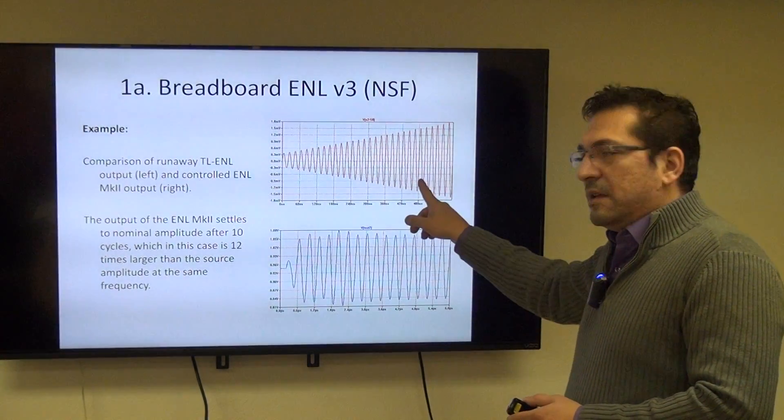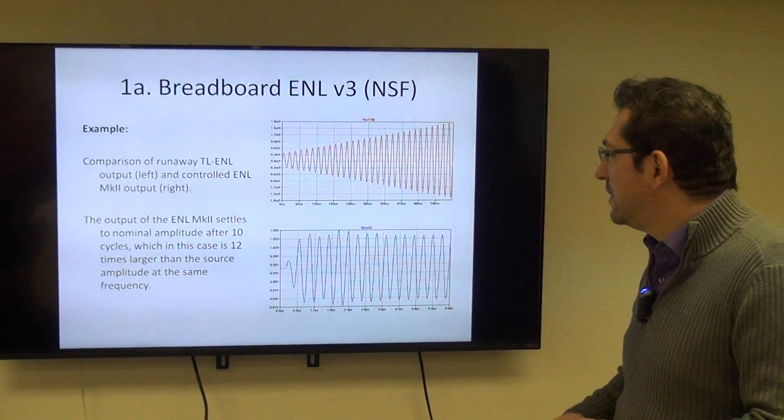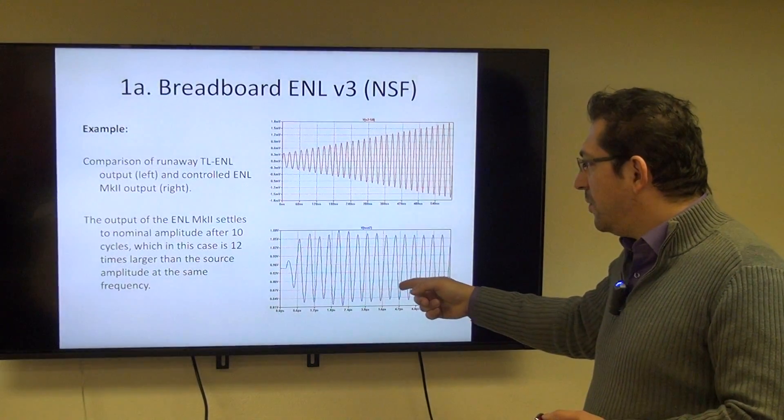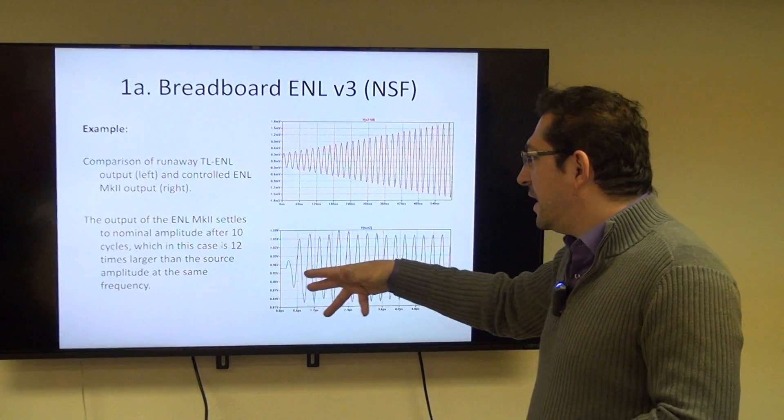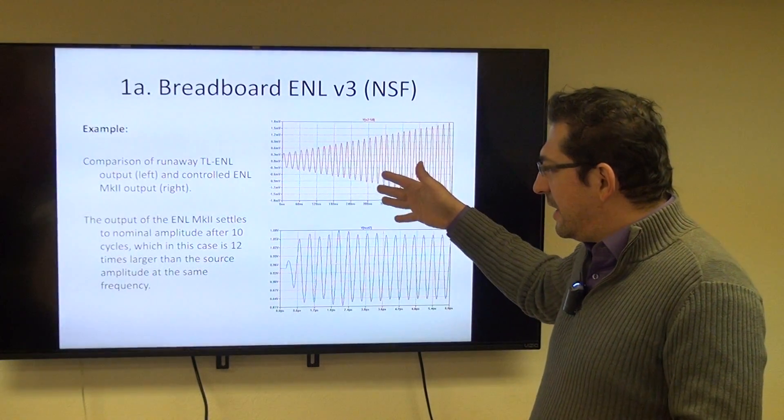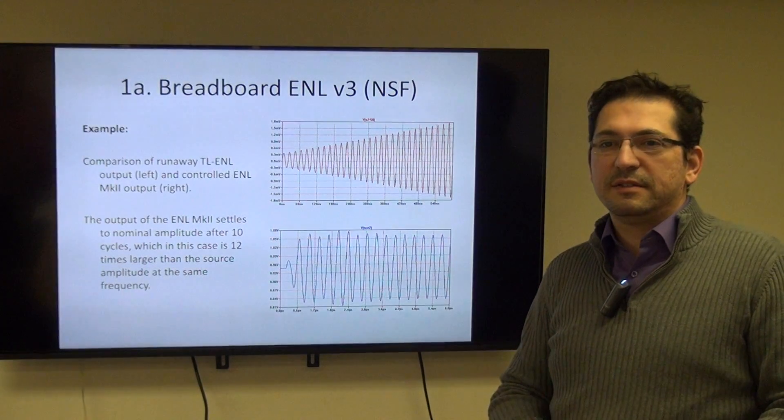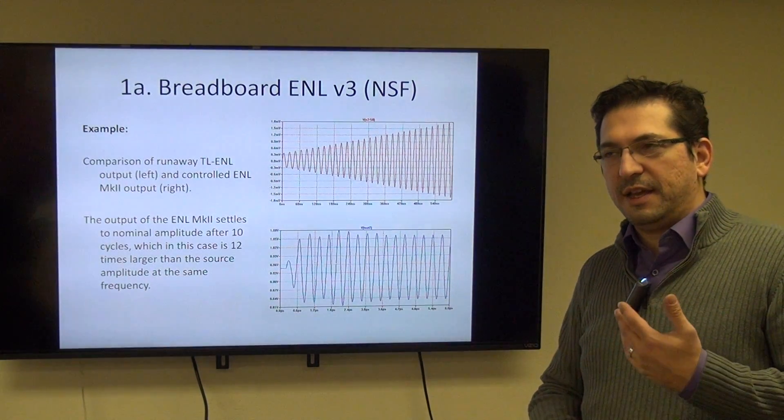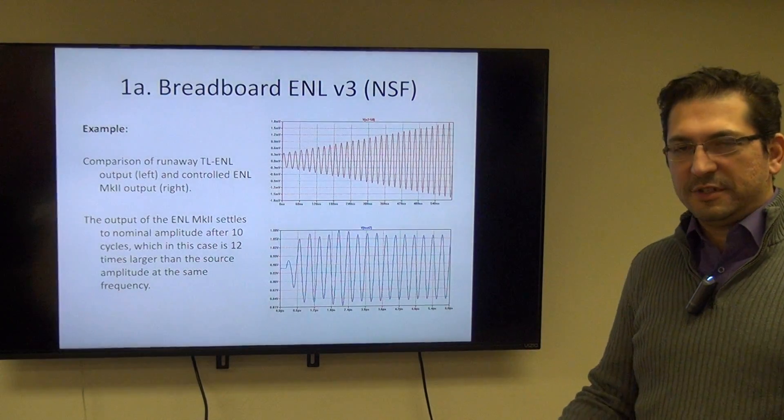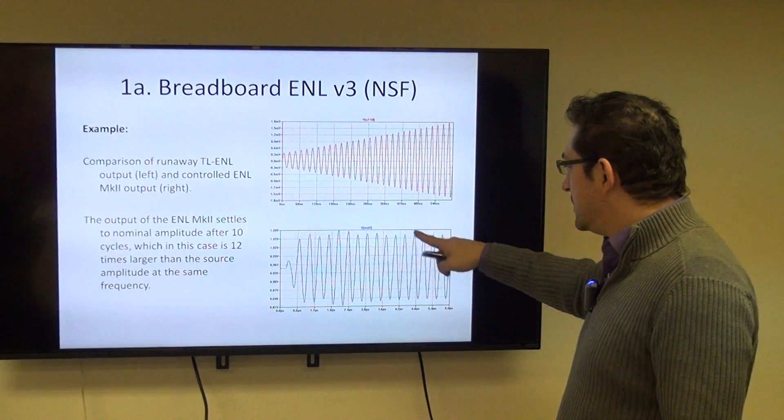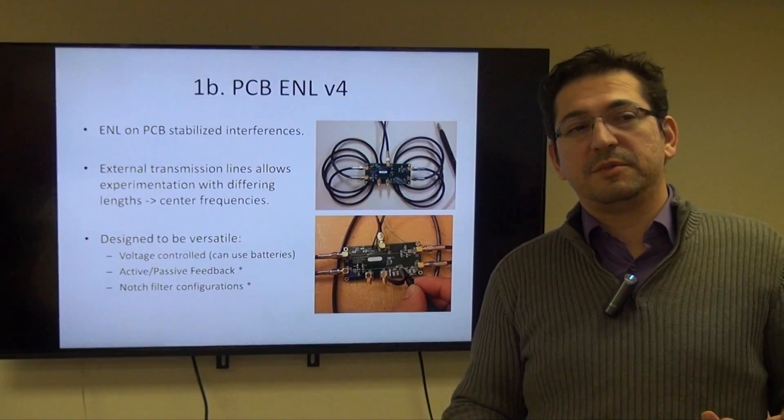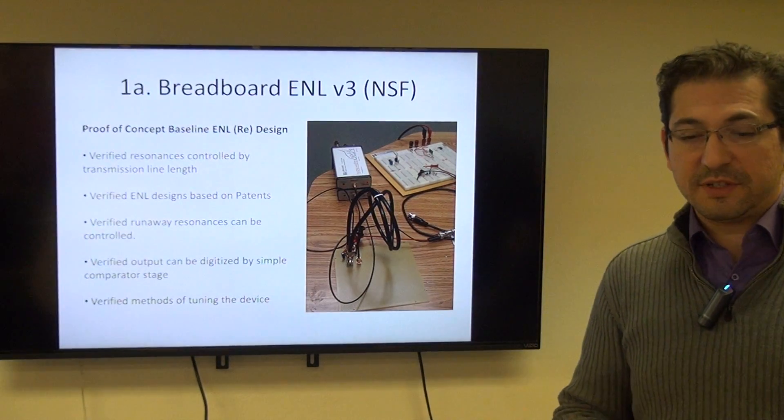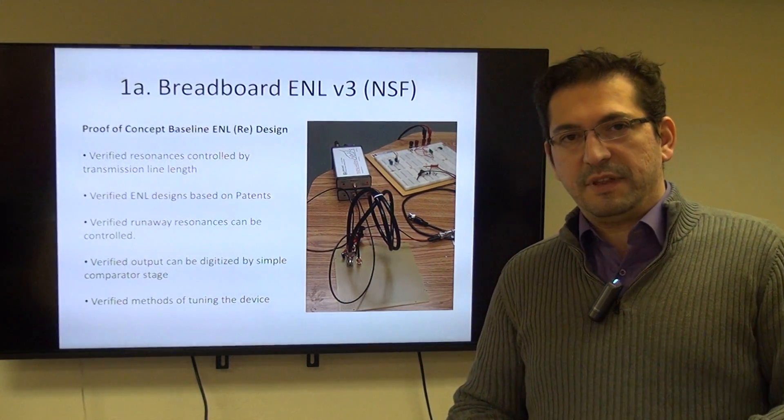This is an actual result from one of the ENLs that we built in the development, called the Mark 2. It's essentially an ENL with a feedback stage. So now we're feeding back the signal through the input, and through some careful tuning, which is trade secret, we are able to stabilize the input signal after just three cycles. The smaller the transmission line is, the higher the frequency. When you go up to the gigahertz range, you're looking at about three centimeters transmission lines. We verified that the resonances that lead to the bandpass filter operation of the ENL are indeed controlled by the transmission length. This is one of the tenets of the operation of the ENL.